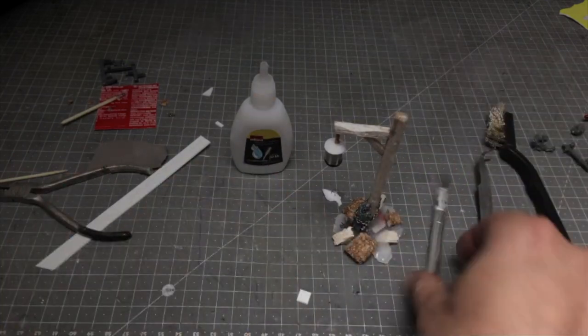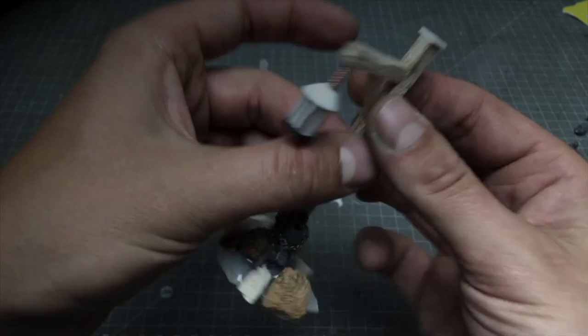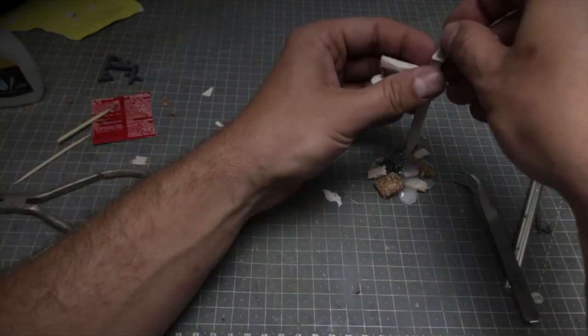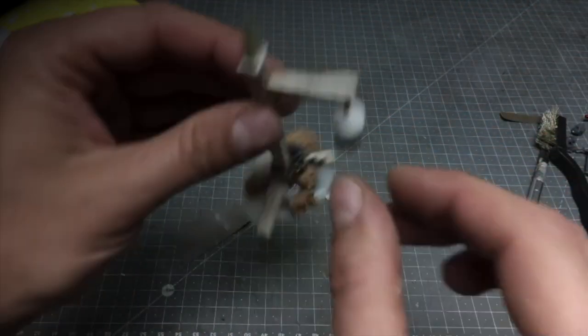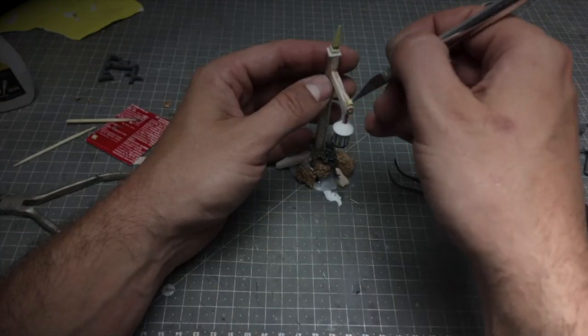After I'm done with the skeleton I decided to add some extra pieces here and there. First of all the spike on top of the lantern. And then a few smaller pieces which should imitate the nails holding the wooden pieces together.